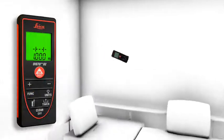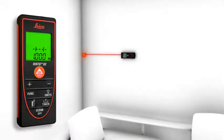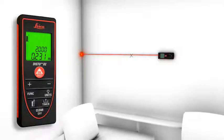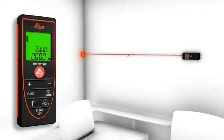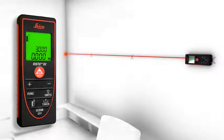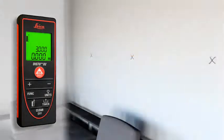The stakeout function is used to stake out equal distances. The instrument gives an audible signal as soon as a preset distance or a multiple thereof is reached.